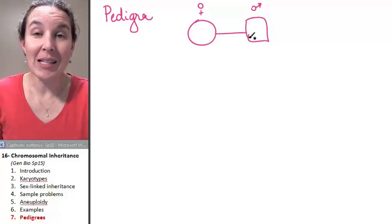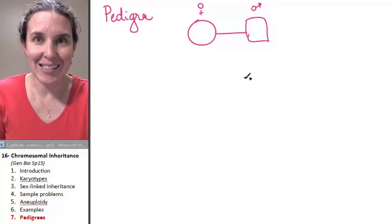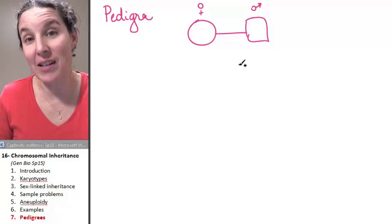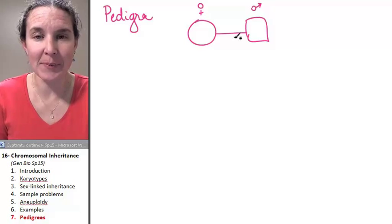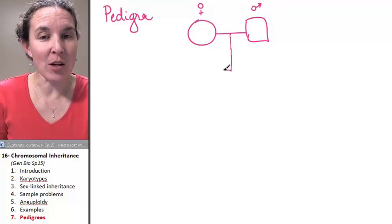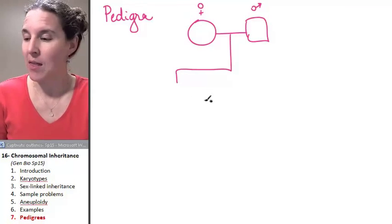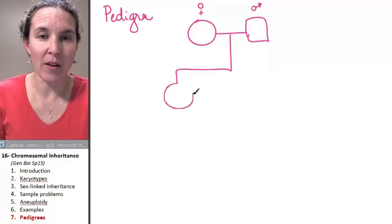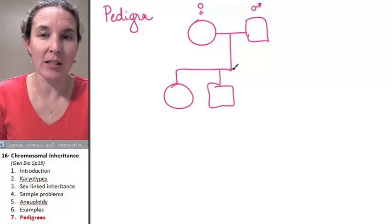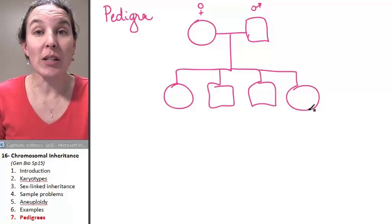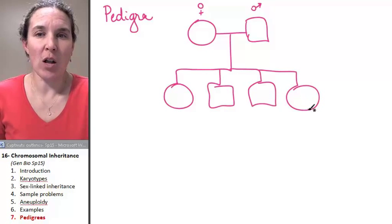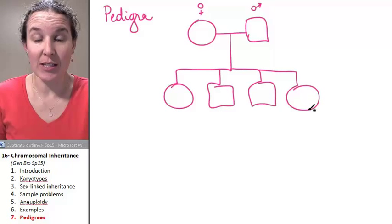Somebody who makes a baby with someone else is connected. Somebody who's married to someone else is connected by a horizontal line. If babies are made from the union, then you end up with another little line that comes down, illustrating all the babies that are made.